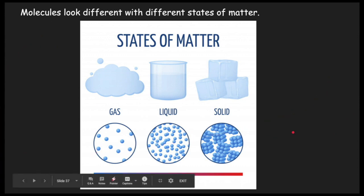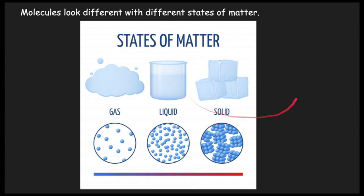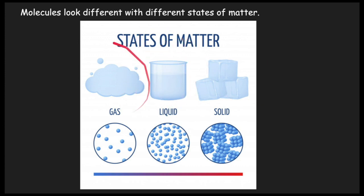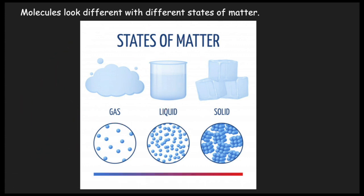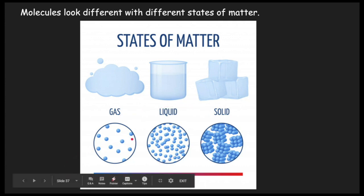Now you know a little bit more about the three states of water. We know that water can come in the form of a solid — ice cubes — it can come in the form of a liquid, and water can come in the form of a gas. You can go ahead and go back to Seesaw and finish your activity for the day.